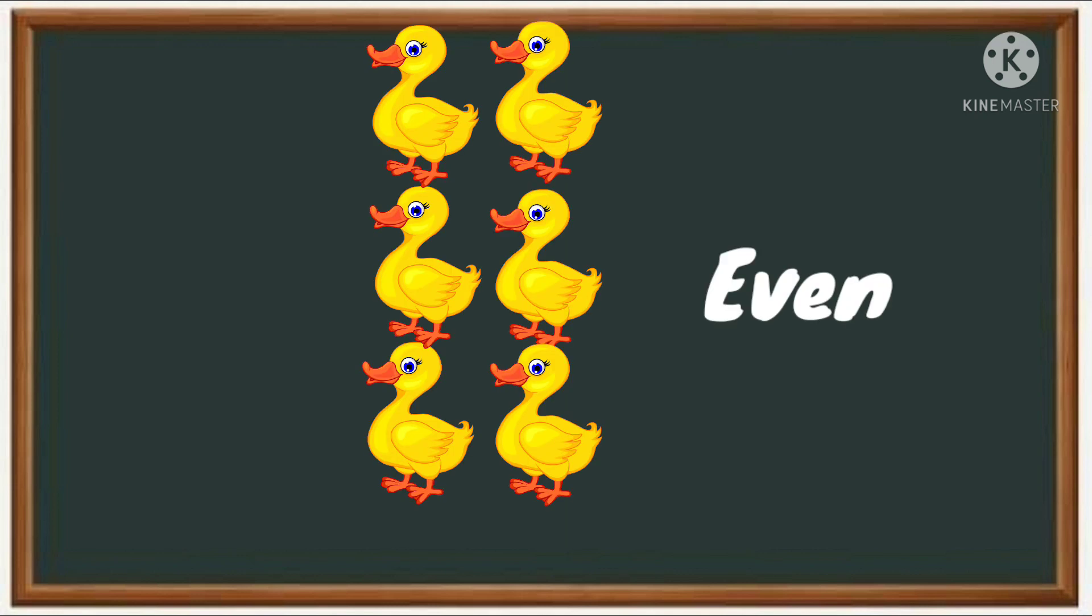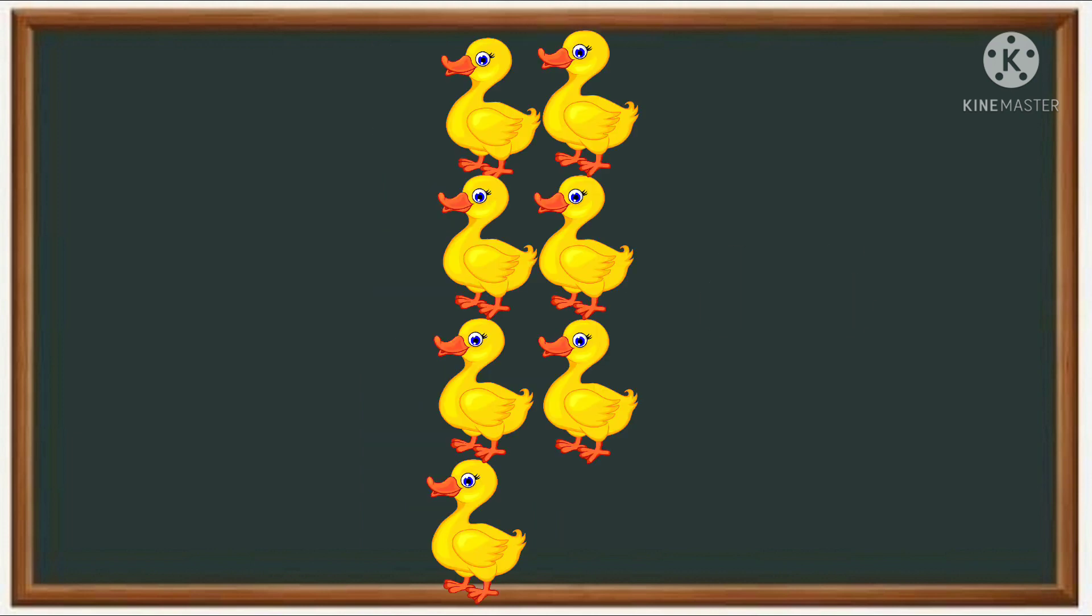Now moving on, we have six duckies. That means each duck has a friend. Six is even. Wow, here are seven duckies, but one ducky doesn't have a friend. Six of them have friends, one is all alone, so seven makes it an odd number.